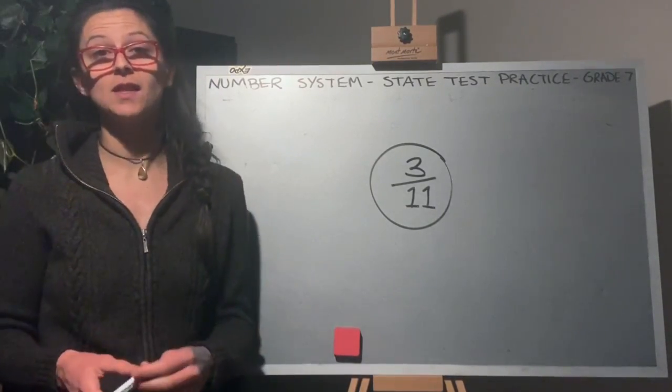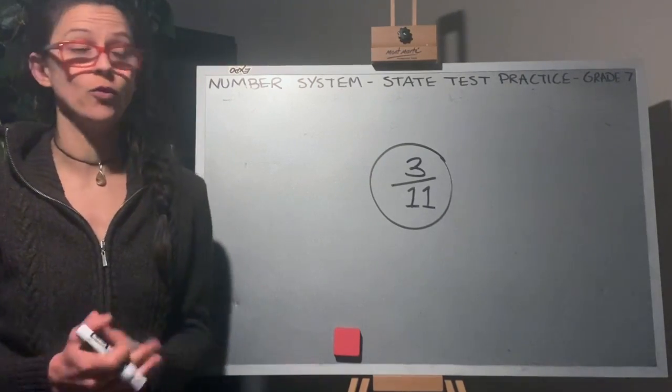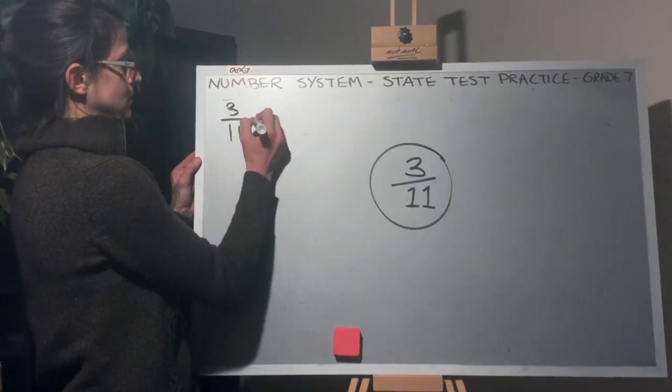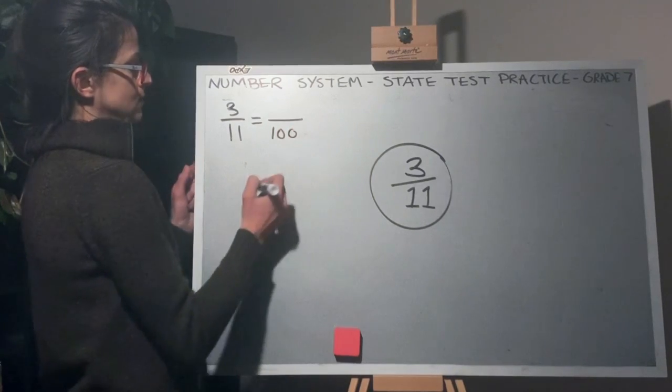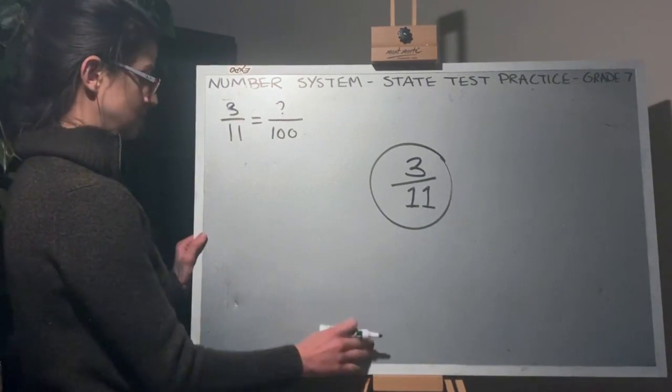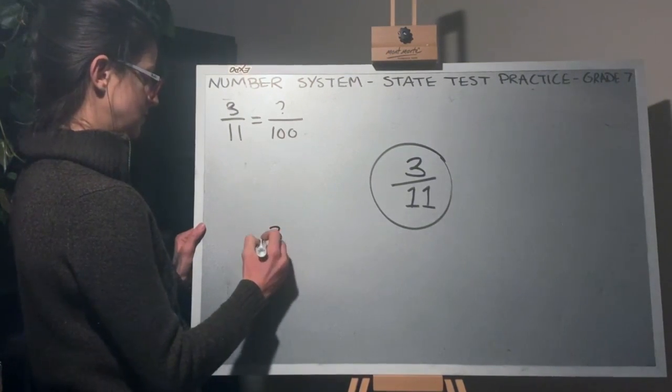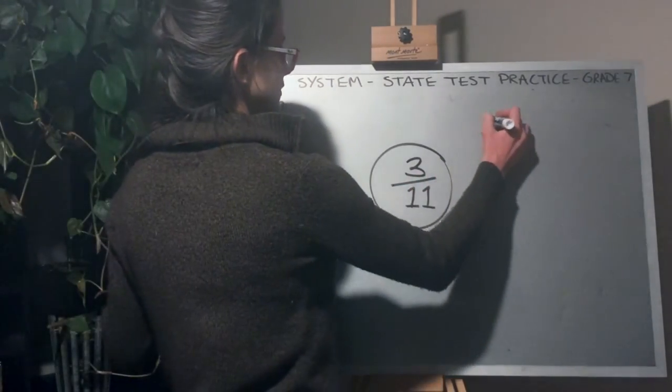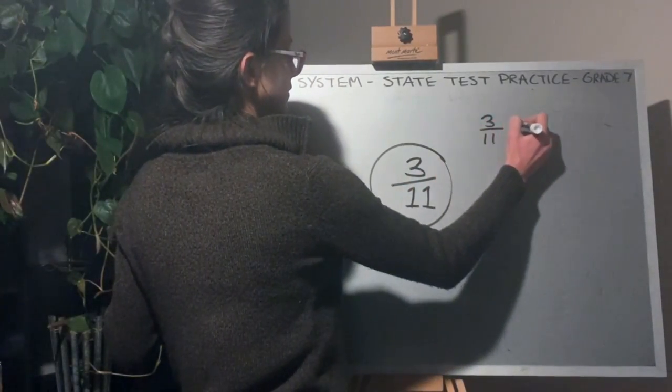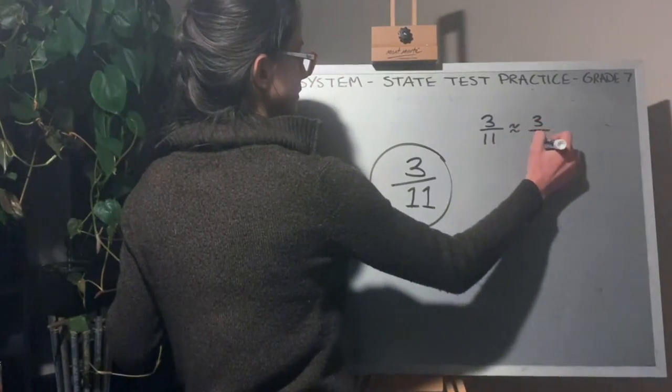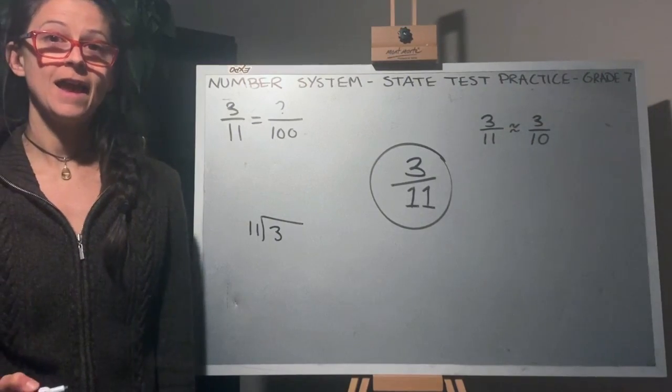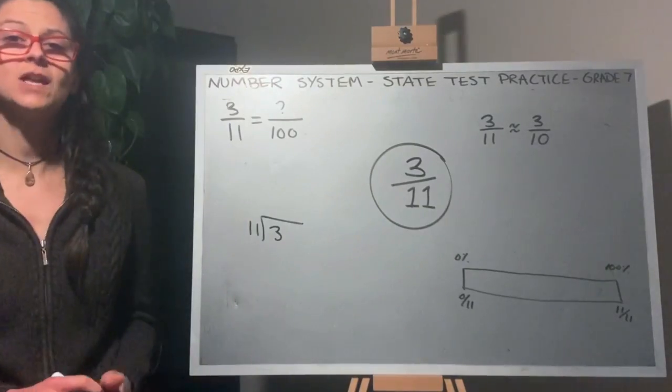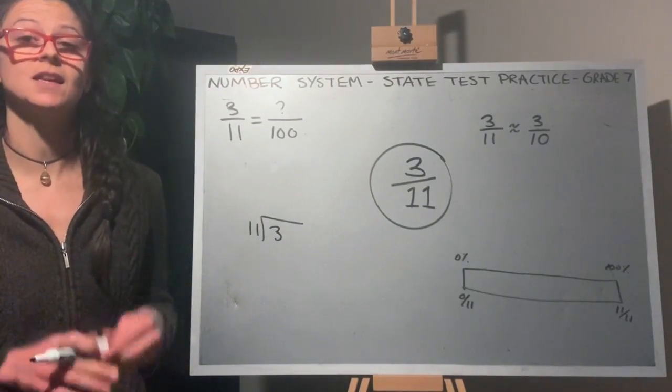Here we have the fraction 3 elevenths. Let's convert it into all the different forms. We can use proportions, long division, estimation, and a visual model to get a better understanding of what 3 elevenths is in other forms.